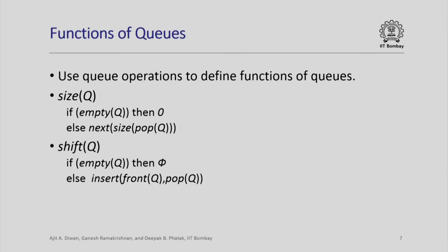This operation takes the front element, removes it from the queue via pop(queue), and then inserts the front element at the end of the resulting queue. You can think of it as a circular shift operation on the queue, and note that it is easy to define using the already defined operations on the queue.